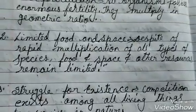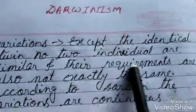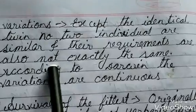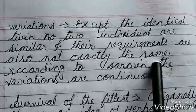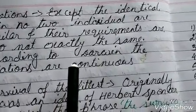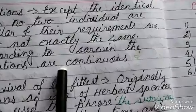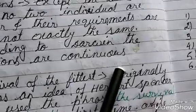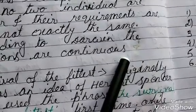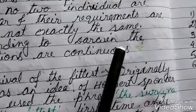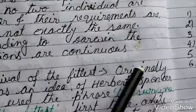Next is variation. Except for identical twins, no two individuals are similar, and their requirements are also not exactly the same. According to Darwin, the variations are continuous. Useful variations which are helpful in adaptation of an organism towards its surroundings would be passed on to the next generation, while non-useful variations will disappear gradually.